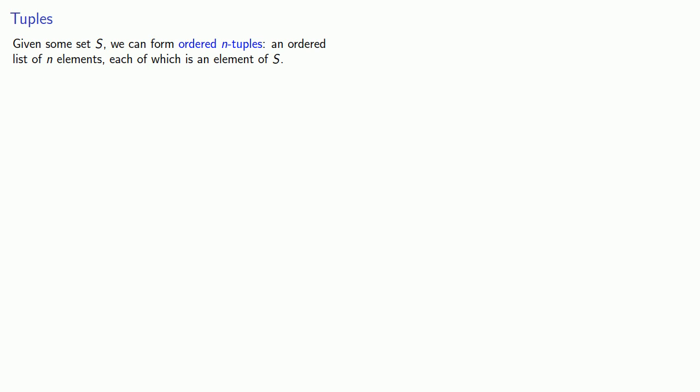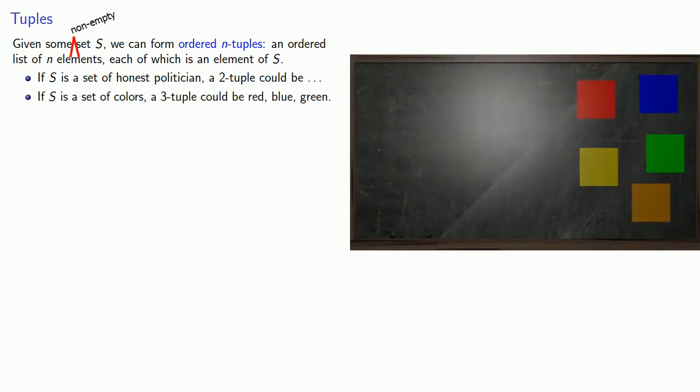For example, if I take the set of honest politicians, a two-tuple would be an ordered list of two elements, both of which are elements of this set. We need to make sure that S is non-empty. So for example, suppose I have a set of colors, a three-tuple could be red, blue, green.